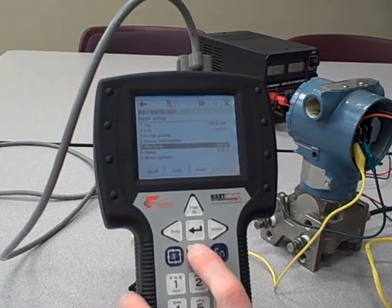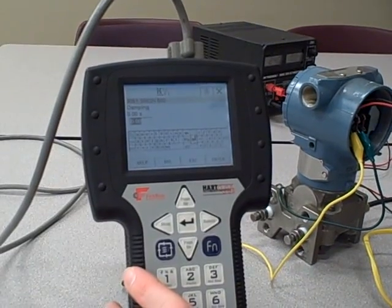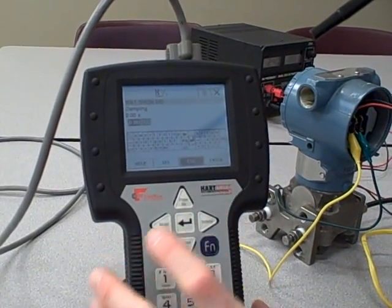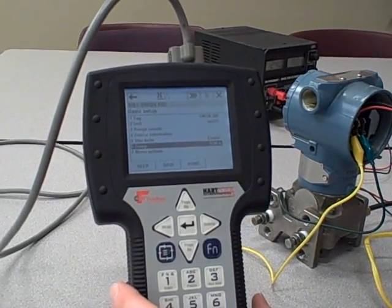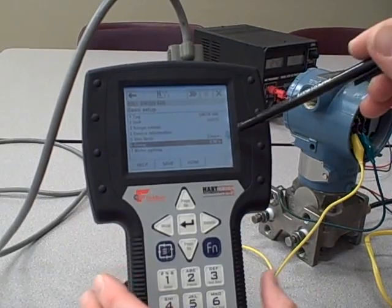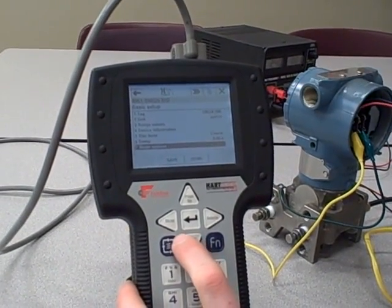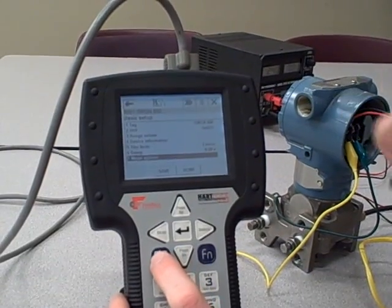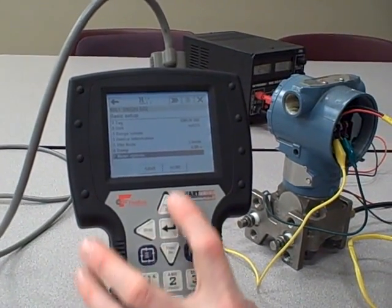We also have Damping. Damping is essentially a low-pass filter function, where we tell the transmitter to ignore or dampen any fluctuating pressures that it sees. That's helpful when you're measuring a pressure that is noisy by nature. And then we have an option here called Meter Options. In case your transmitter has a built-in indicator on the side, you can set various options that the indicator can follow.